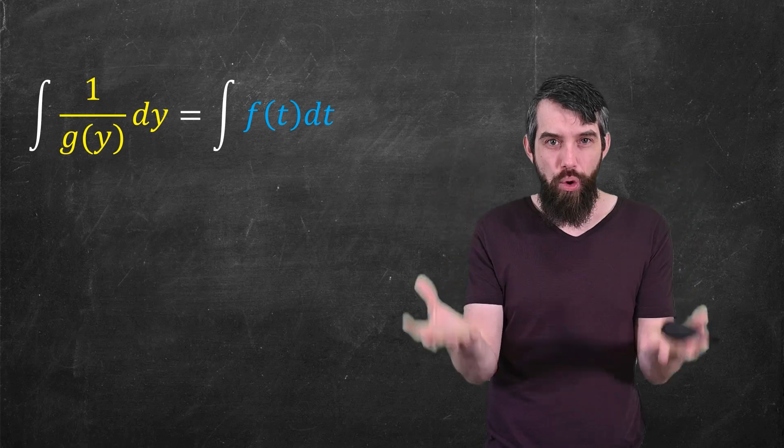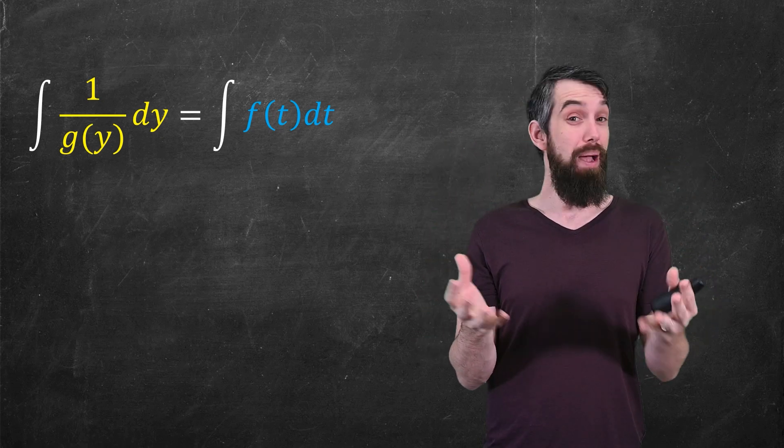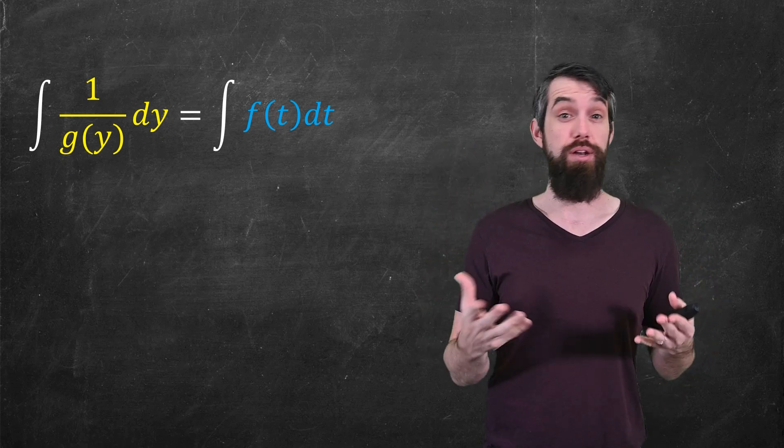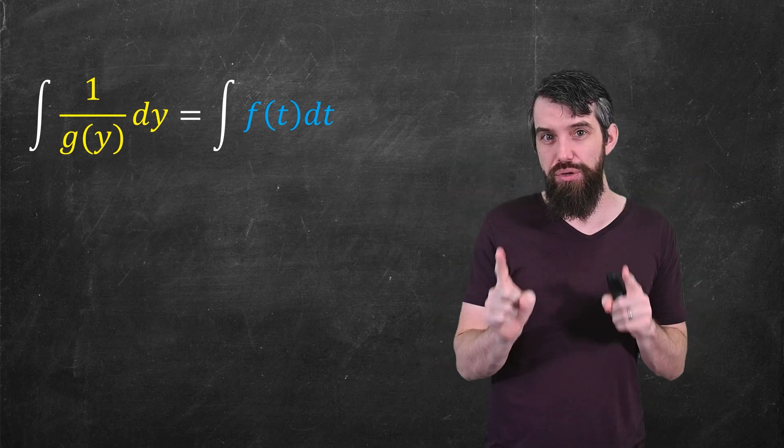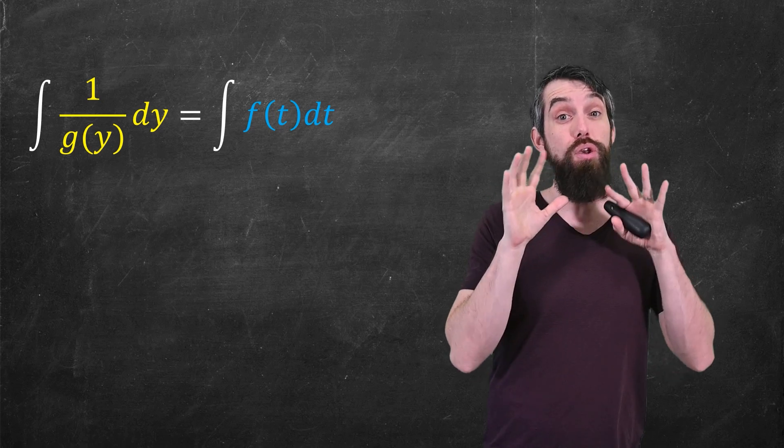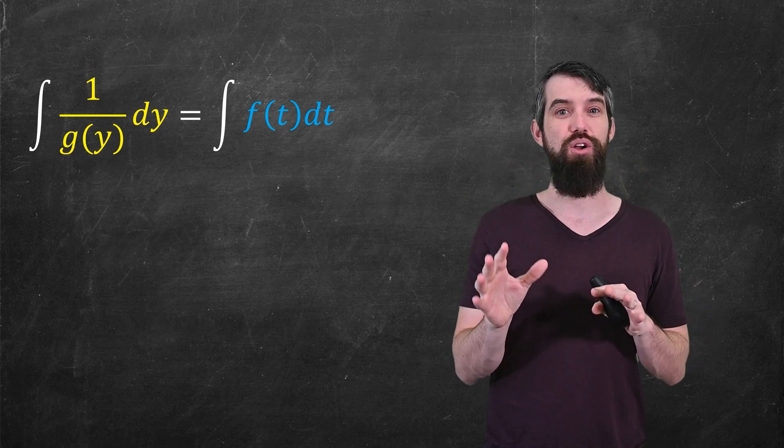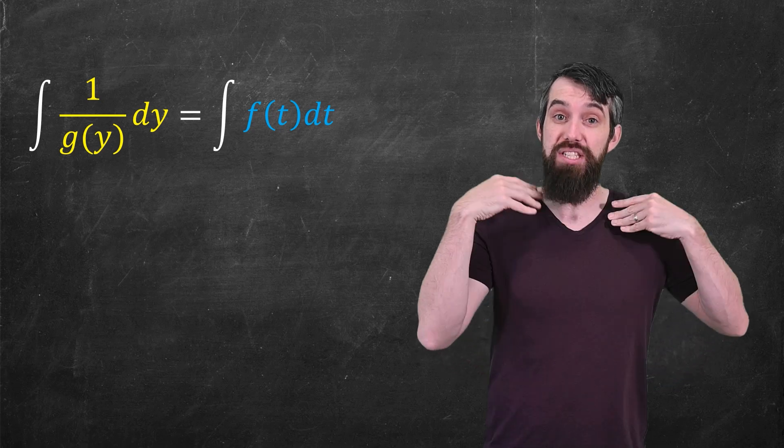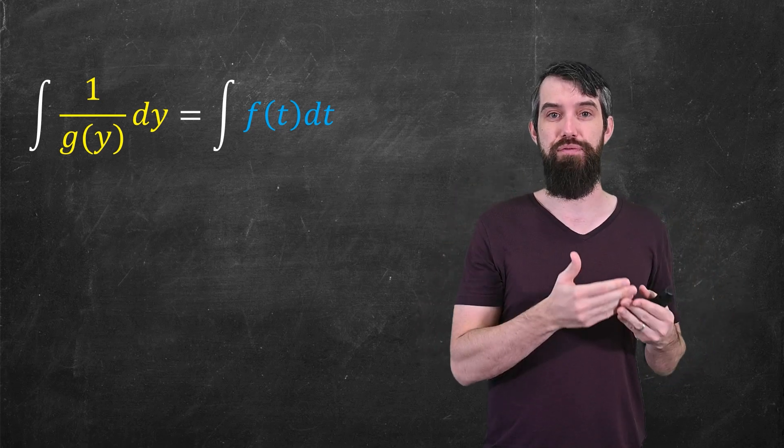Either way, I have an equation of two integrals. I might be able to do these integrals. I might not be. Integration can sometimes be hard. But if I can do those integrals, I'm going to get some equation in terms of y and t, but no longer in terms of y prime. It's an equation of y and t, and that will be my solution to the separable differential equation.